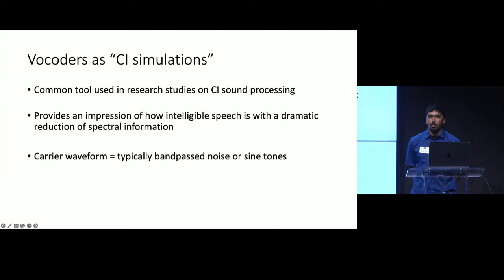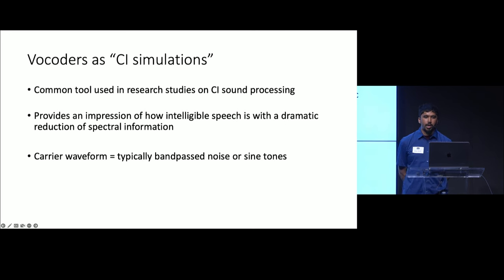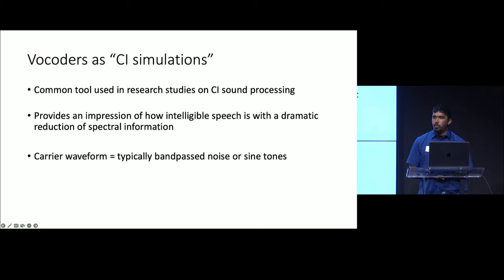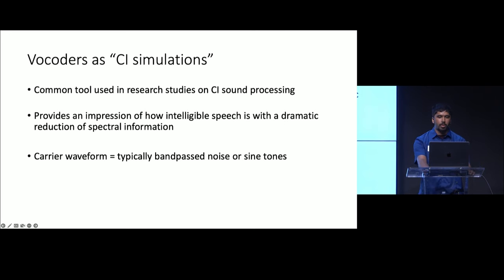Given that CI processing is based on the channel vocoder, vocoders are used quite often in research as CI simulations, where listening studies are conducted with subjects with normal hearing. This has benefits in terms of controlling for factors which are highly variable in the CI population, such as duration of deafness, duration of implant use, and level of neurological functioning. These simulations don't necessarily sound exactly like CI devices, but they give an impression of speech intelligibility achievable with dramatic reduction in spectral resolution. These simulations typically use bandpass noise or sine tones centered on the center frequencies of filter bank channels.